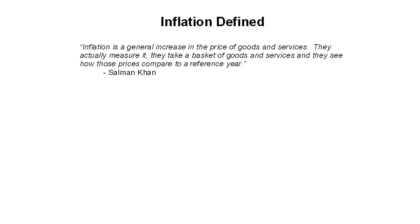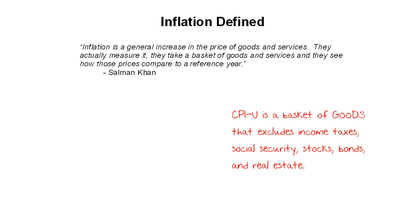The way that Salman Khan described inflation is as a general increase in the price of goods and services. They actually measure it — they take a basket of goods and services and see how those prices compare to a reference year. What Khan is talking about there is the Consumer Price Index, which is a basket of about 200 goods. They have families keep diaries, and over the course of a year they go through about 14,000 weekly diaries. It's not inflation, though.